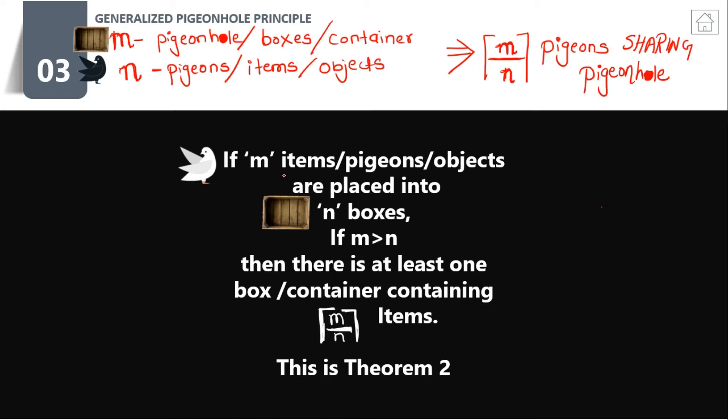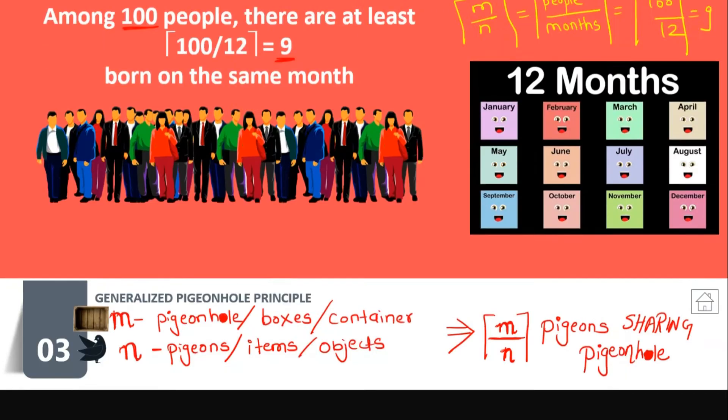The theorem states: if m items or pigeons or objects are placed into n boxes and if m is greater than n, then there is at least one box or container containing m divided by n items.